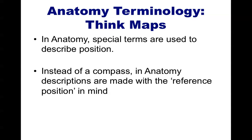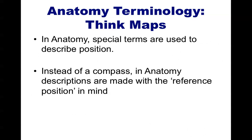Whereas in a map you have north being the top as a standard convention, or you have a compass showing somebody which way north is and allowing them to decode the map, in anatomy, descriptions are going to be made with a reference position in mind. The reference position in anatomy, also known as anatomical position, is simply somebody standing, relaxed, with their arms to their side and their palms facing outwards. All the descriptions we will talk about, and the naming conventions for many different parts of the human body, are made with this position in mind.